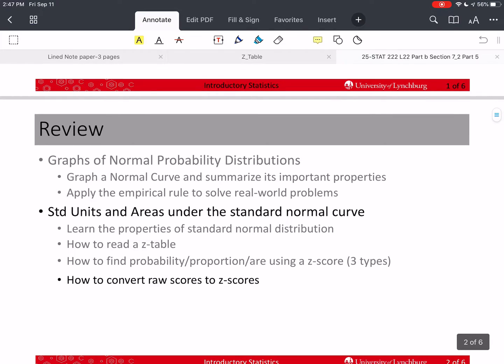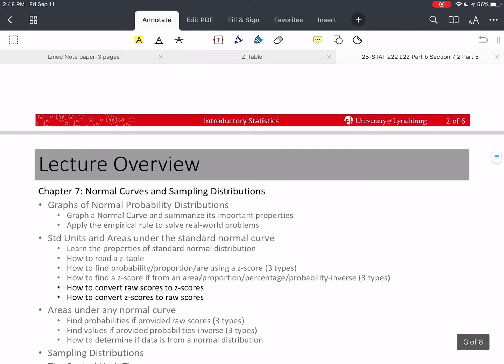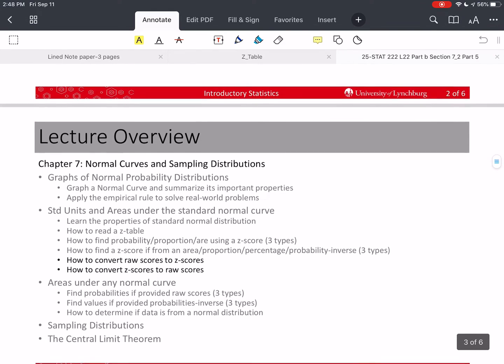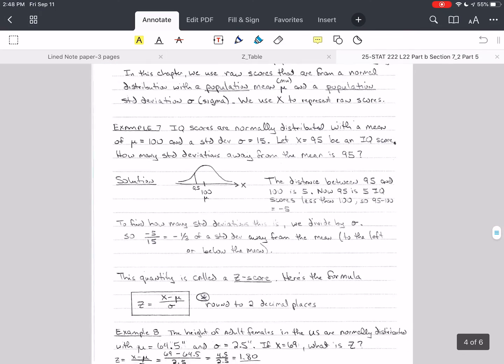So last time we finished up on how to find a probability, how to find a z-score if we were given an area or probability, and we started talking about how to convert z-scores to raw scores. Let's finish that and finish up this section and start the next section briefly.